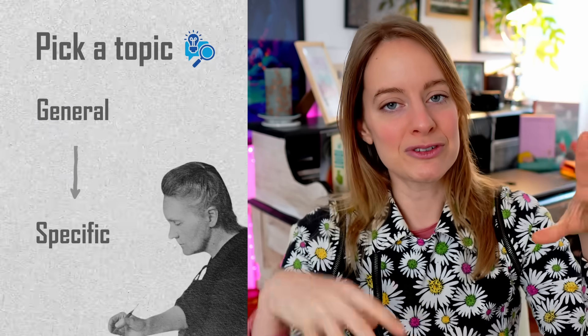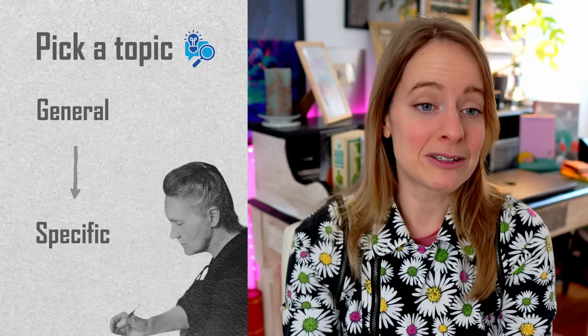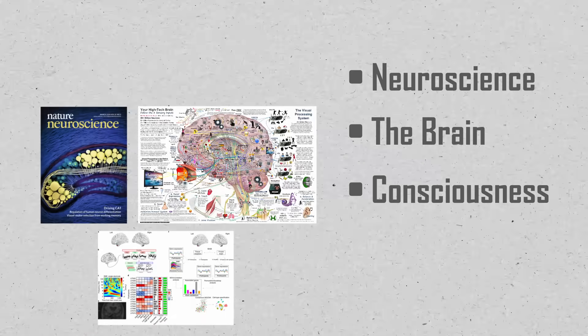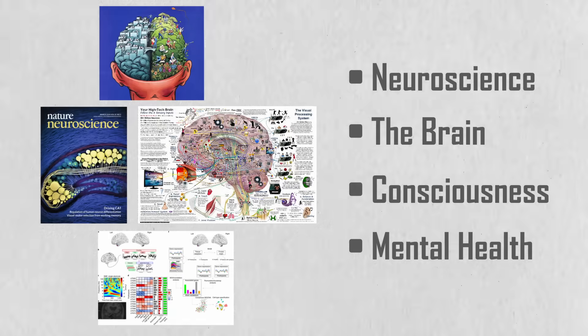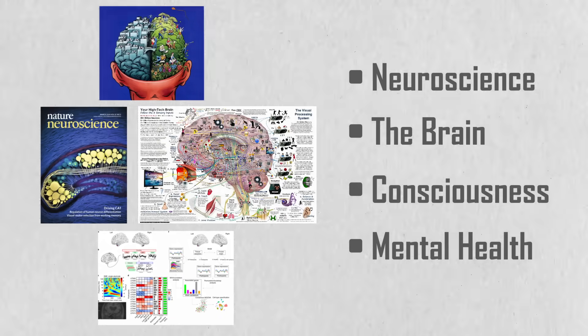The first thing when you do research is to pick a topic, and here I would advise starting from general to specific. Most of us have a topic in mind we might want to learn about — that can be neuroscience, the brain, consciousness, mental health. But this is very general, and if you want to do research on a specific topic you actually need to be more specific. It's really helpful to form a very specific question about the type of research you want to do.